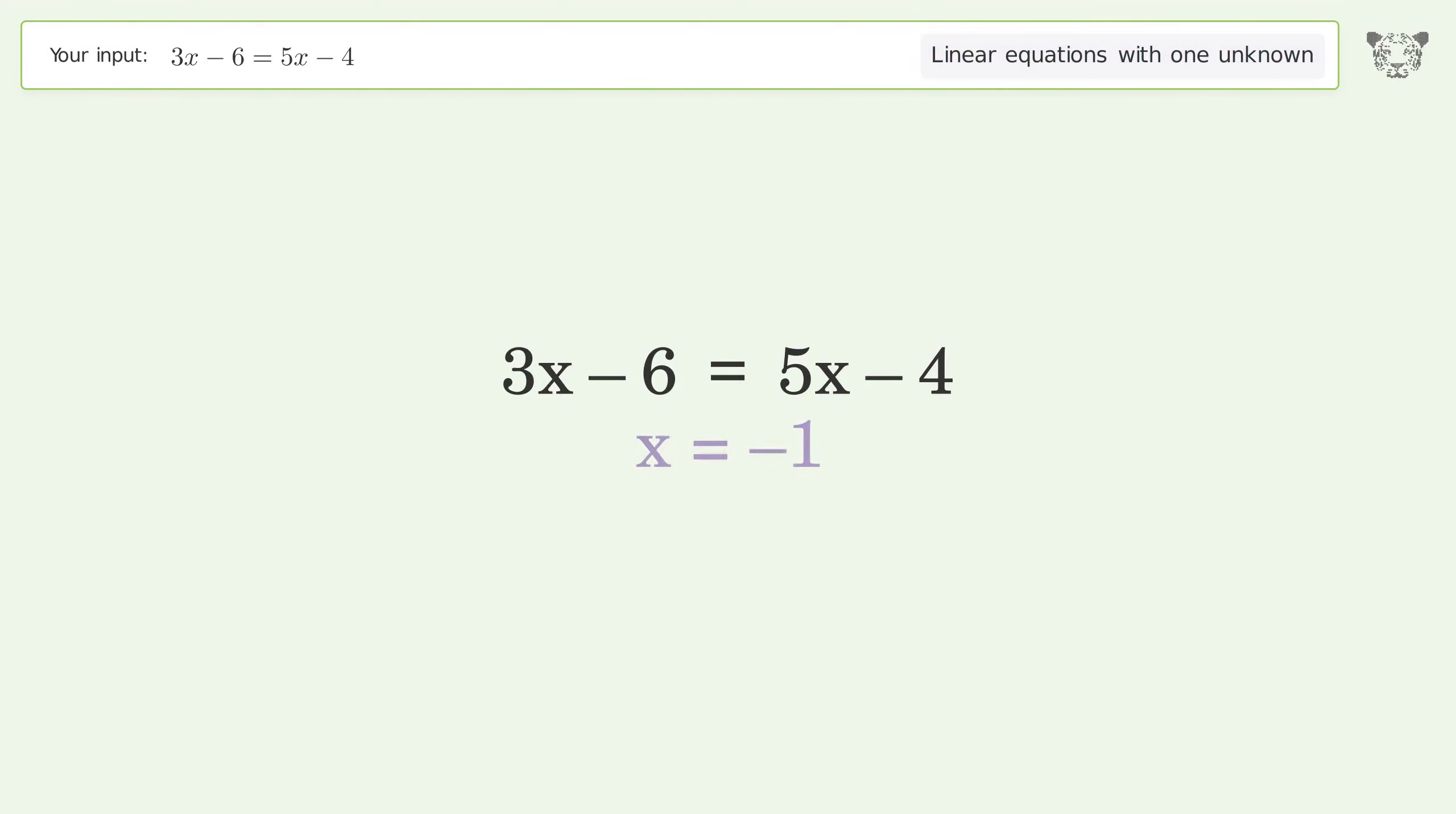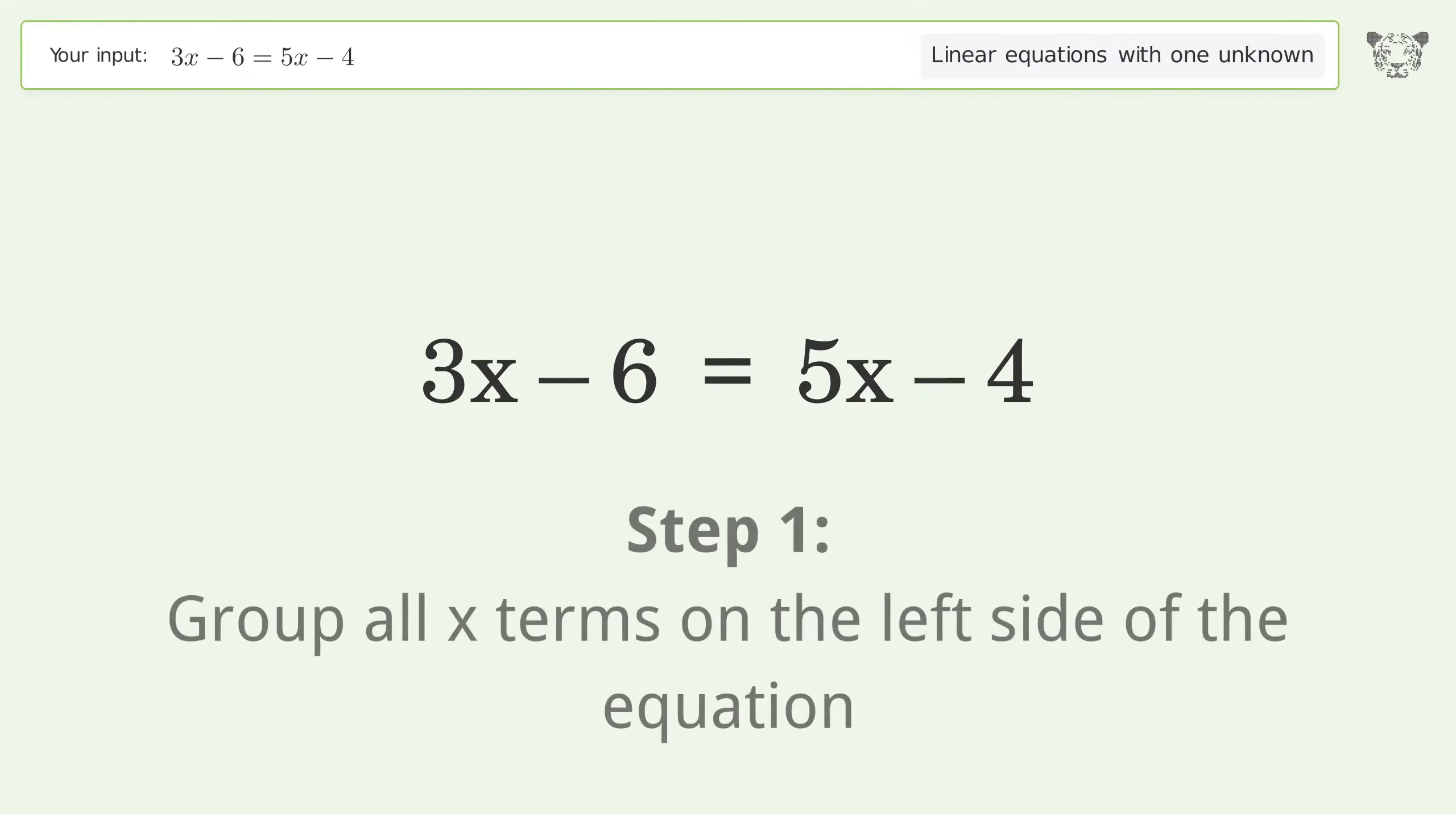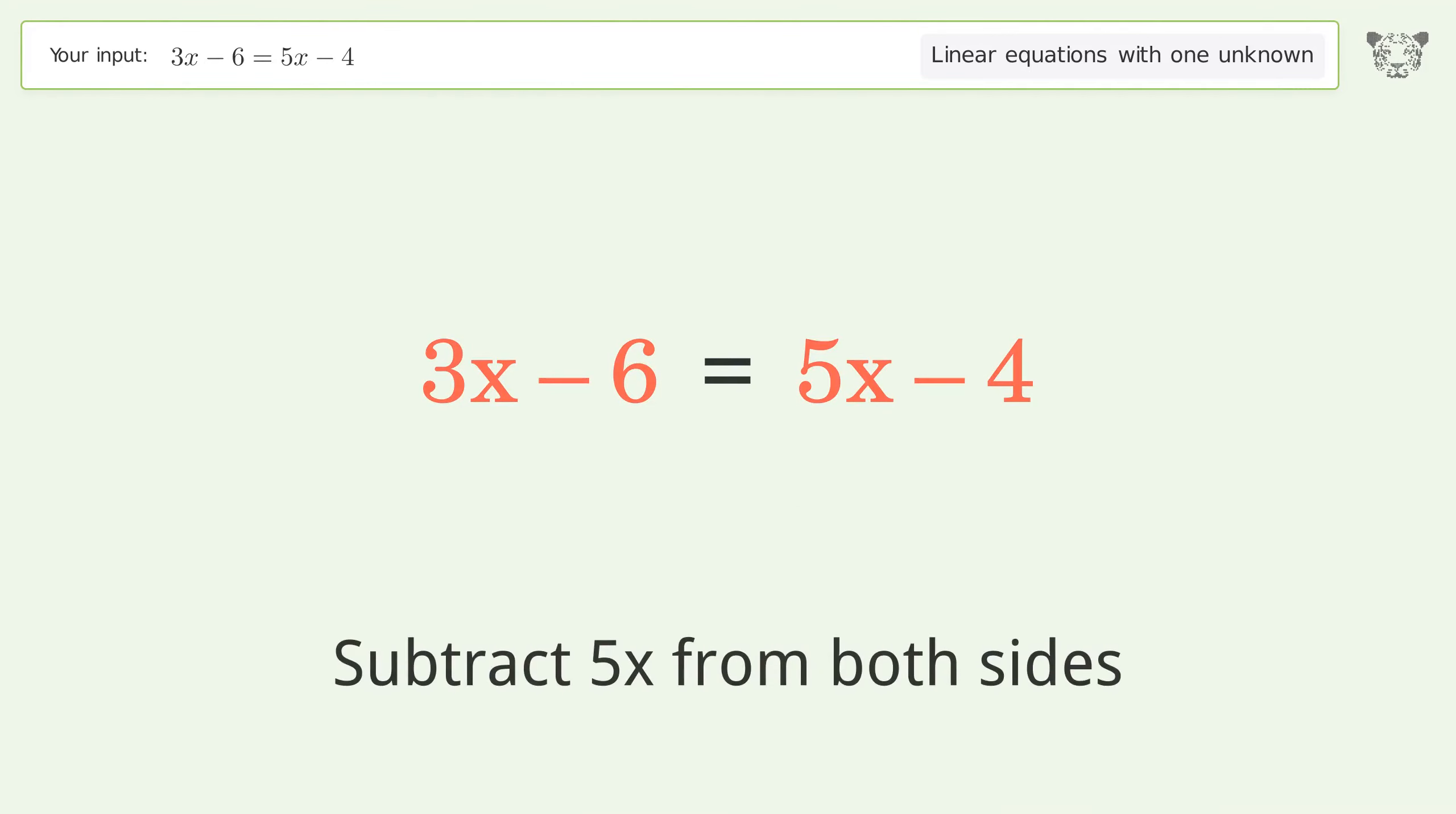You ask Tiger to solve this. This deals with linear equations with one unknown. The final result is x equals negative 1. Let's solve it step by step. Group all x terms on the left side of the equation.